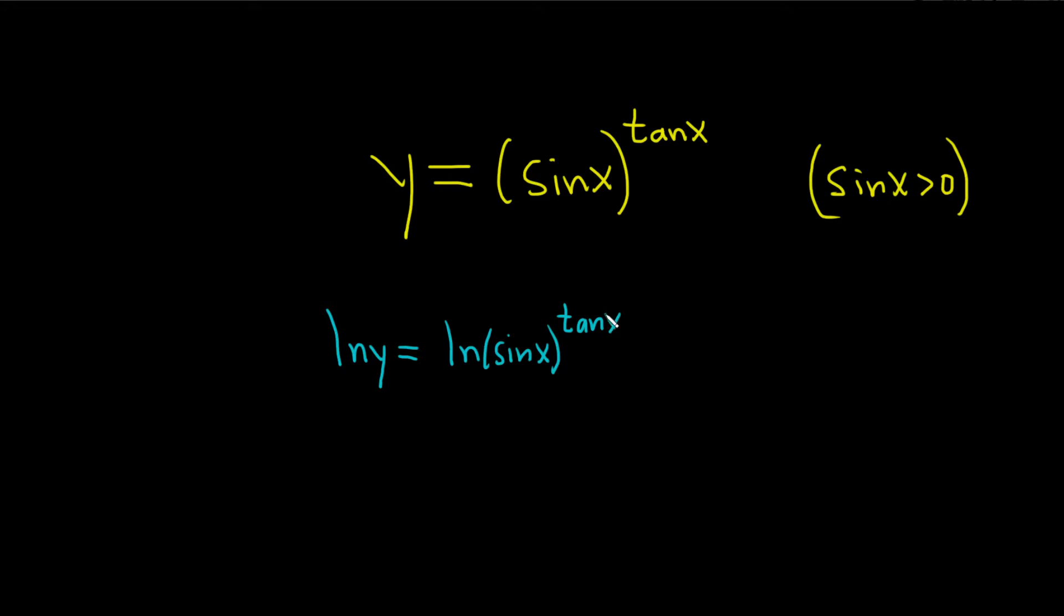That's step one in logarithmic differentiation. The next step in logarithmic differentiation is to simplify everything using properties of logs. On the left-hand side, that will remain the same. And then here we can take the tangent function and just put it in the front, just bring it down. So this is going to be parentheses, tangent of x, times the natural log of the sine of x.